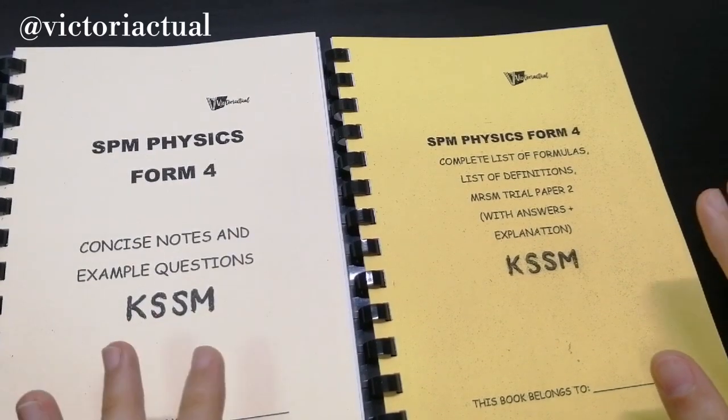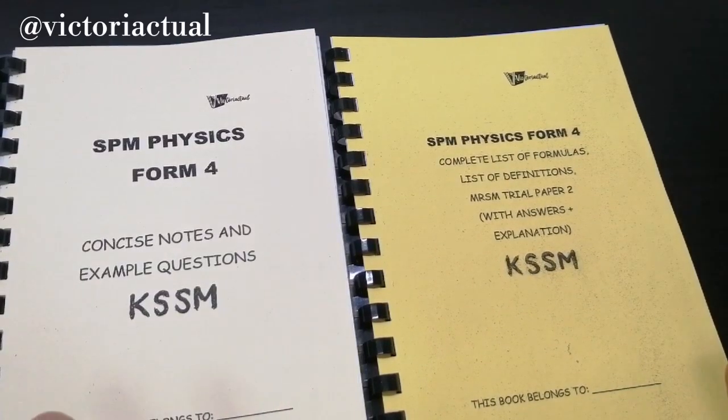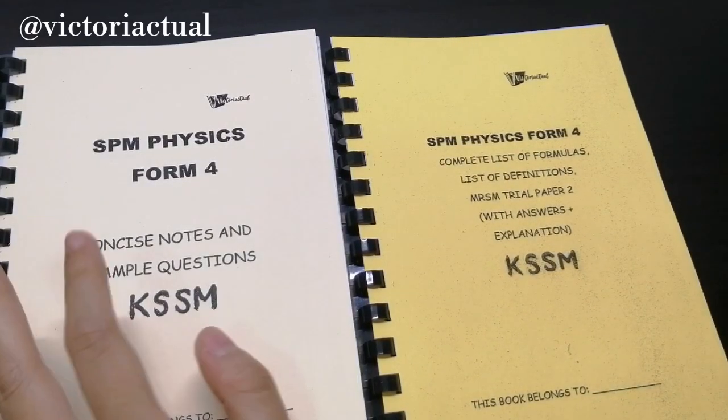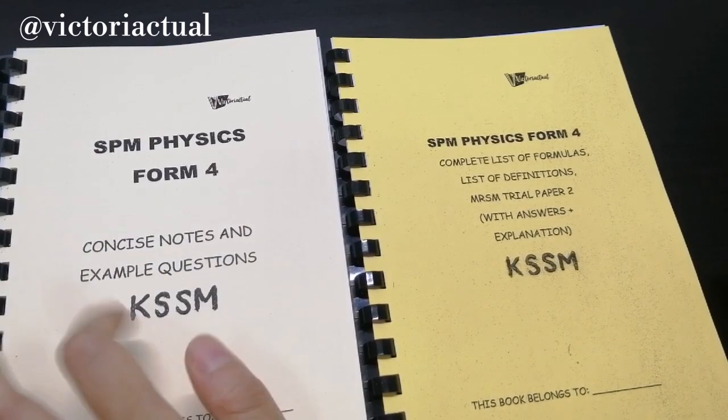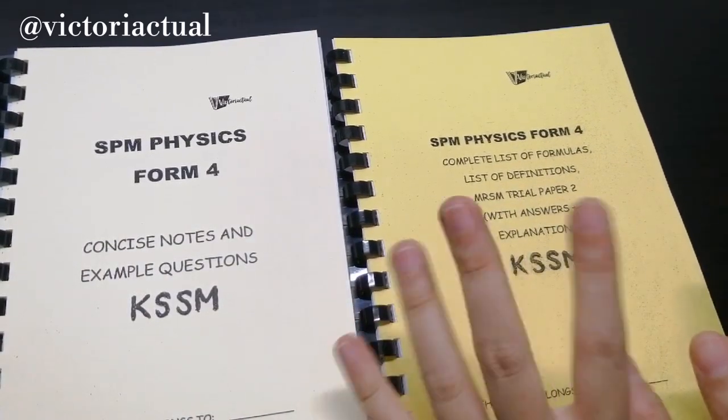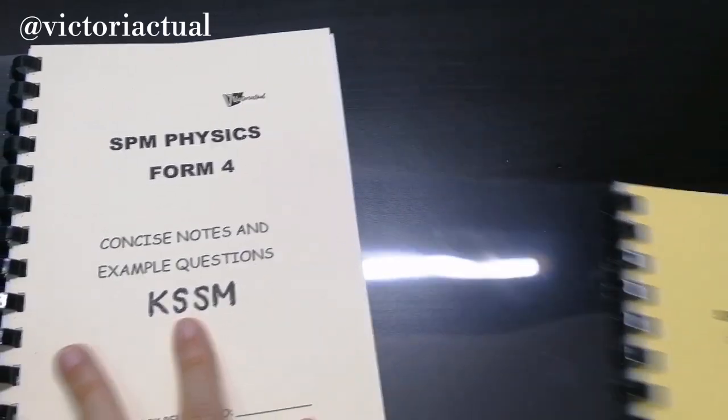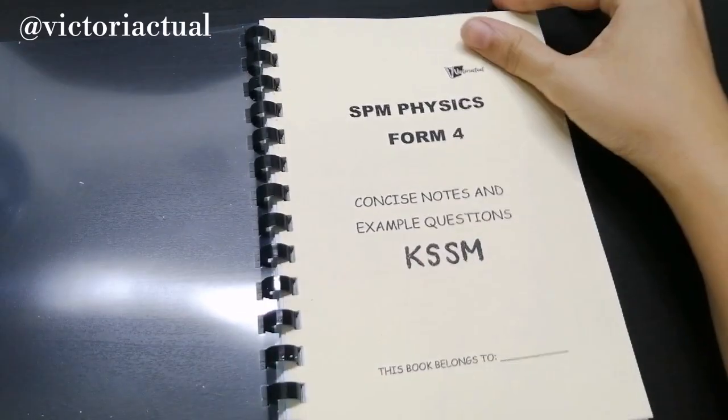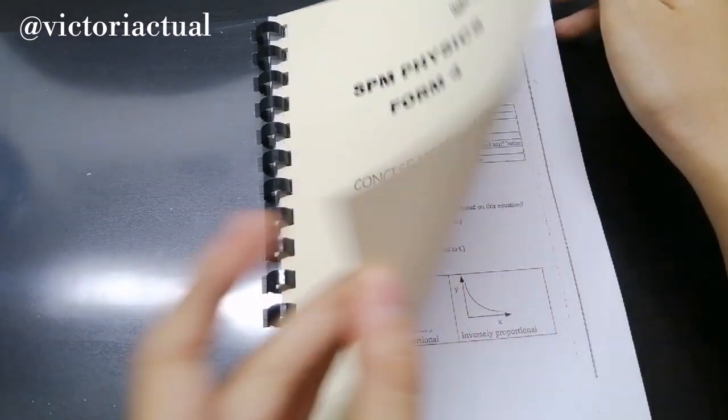Alright, so we have two books here and I'm actually going to be selling them as a set. We have concise notes and example questions and the complete list of formulas, definitions and MRSM trial paper too. So we'll do a flip through of this first, which is the concise notes and example questions.